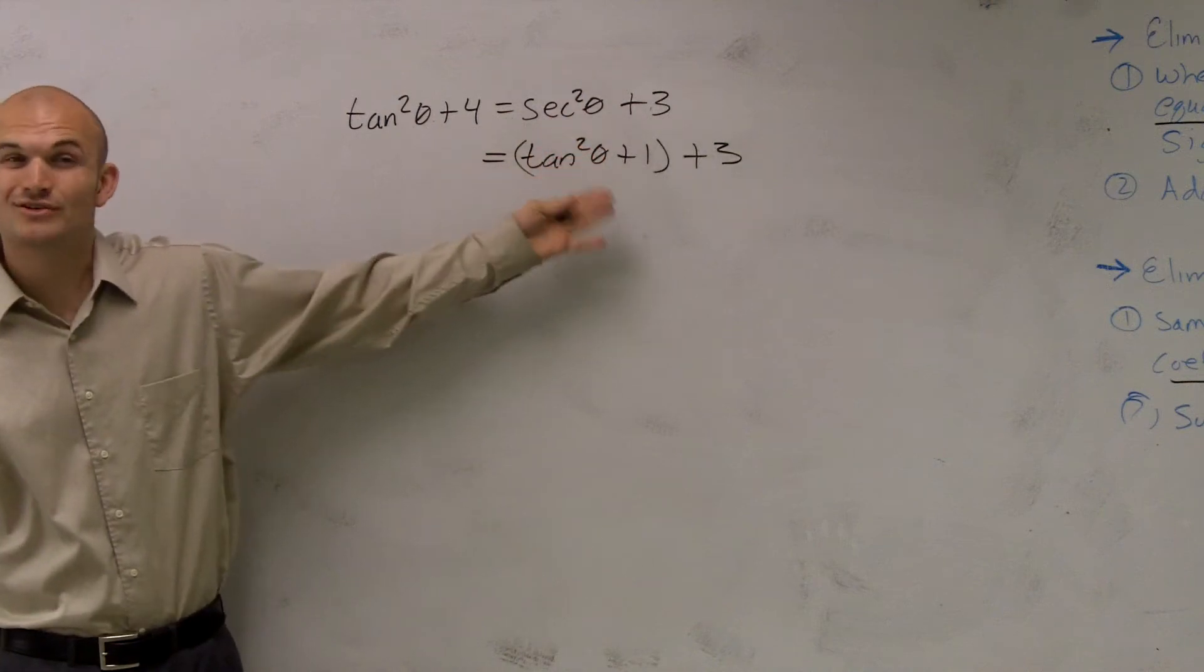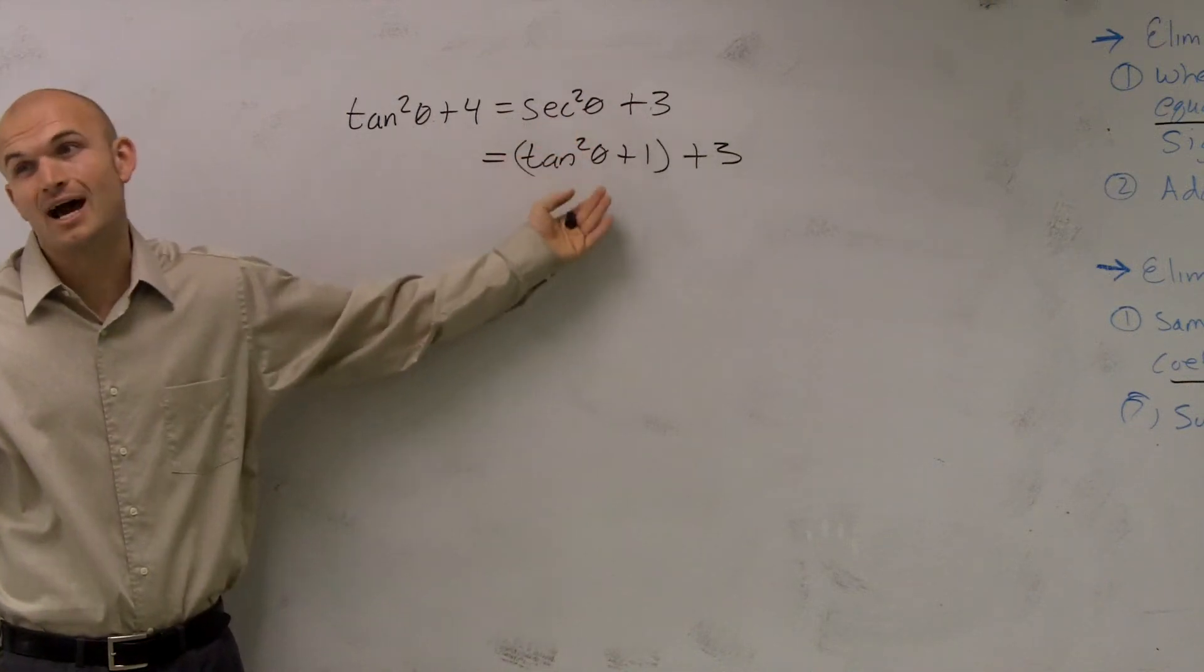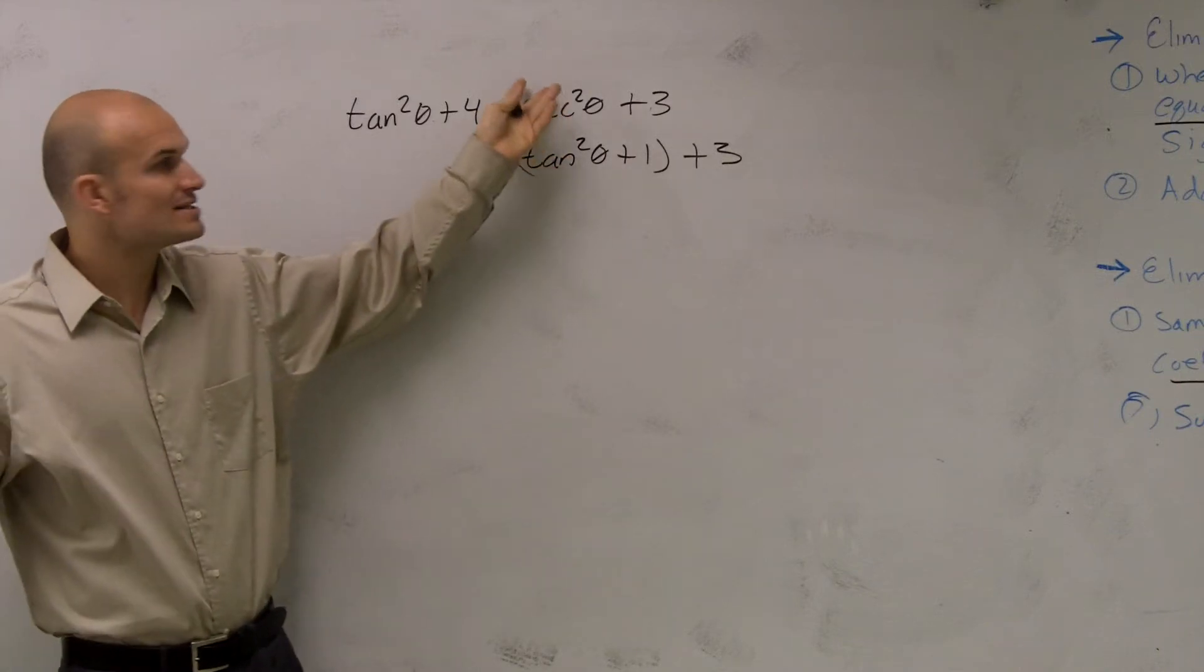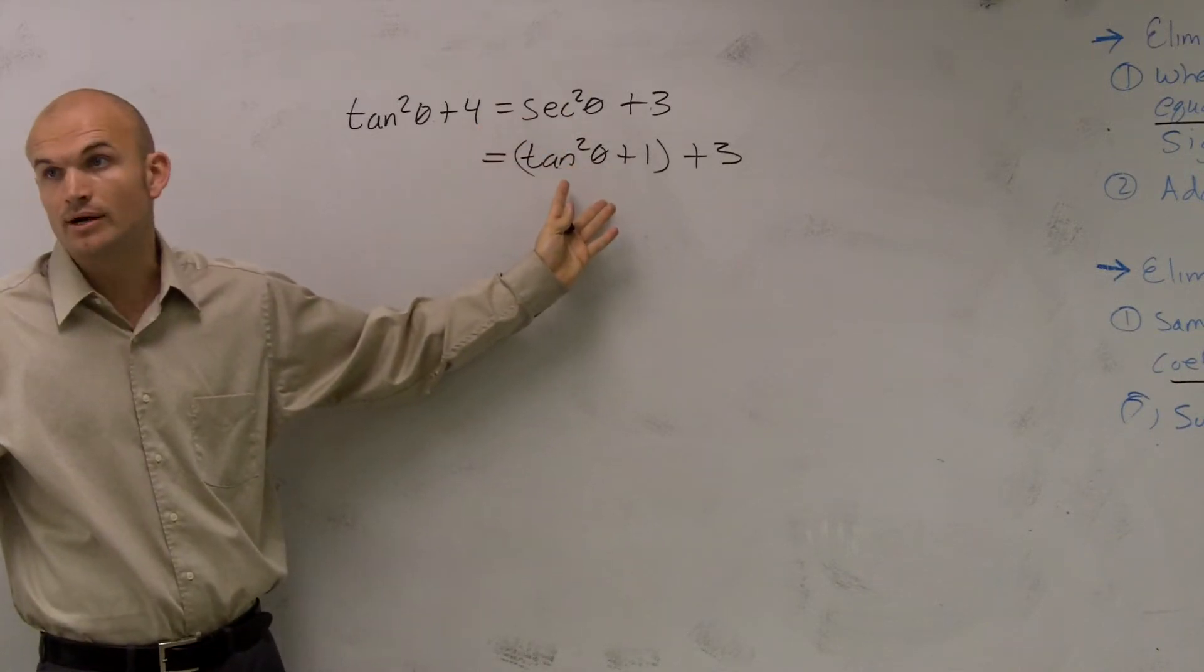That is in your trig identities, which I told you guys it's essential that you have these down, and you have them memorized, so you can easily translate secant squared to tangent squared plus 1.